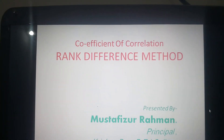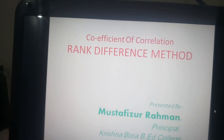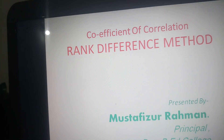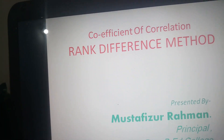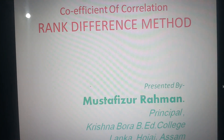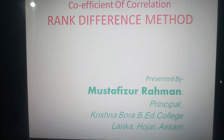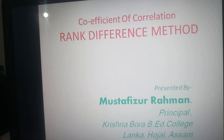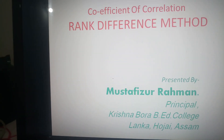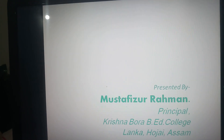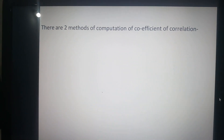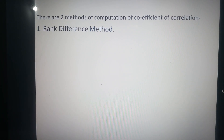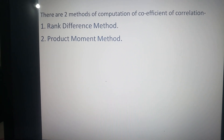In education and psychology, the coefficient of correlation is very essential because if we want to know the different attributes or abilities of an individual, we have to know the correlation between two sets or between two subjects. There are two methods of computing correlation: one is the rank difference method and another is the product moment method.